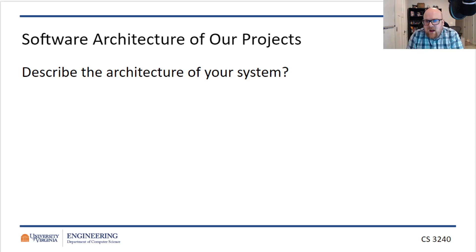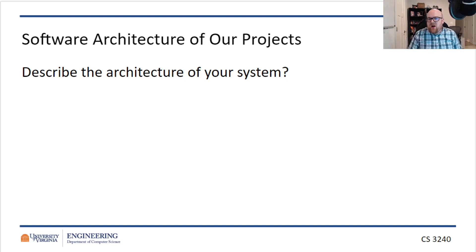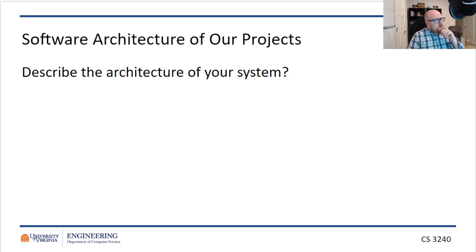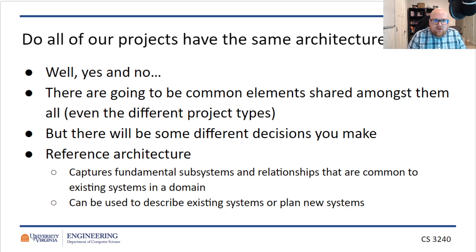Some of you may have found that question hard to answer. Because after all, you're used to building quick disposable projects for the purposes of classes — quick disposable software. And so you haven't really had to think about architecture. In 2110, we told you what the architecture was. In 1110, you didn't even have to worry about architecture at all — you only had a single program and didn't have multiple classes interacting. So what is the architecture of a system may be a hard question for you to answer because you haven't ever thought of it necessarily before.